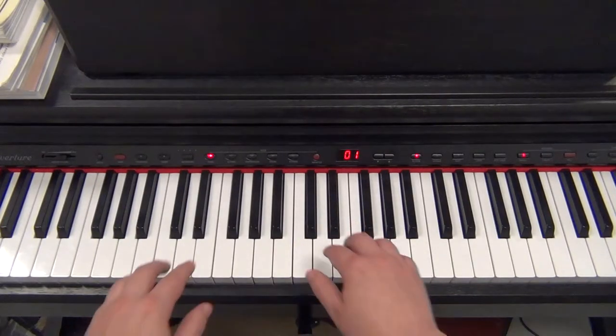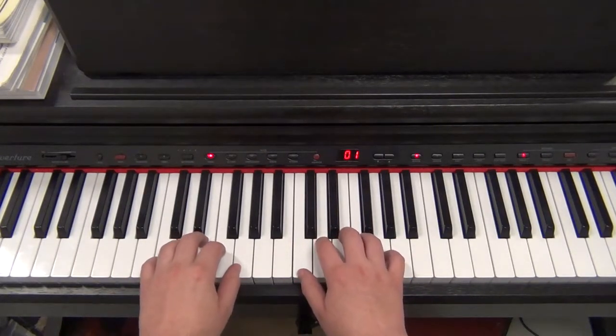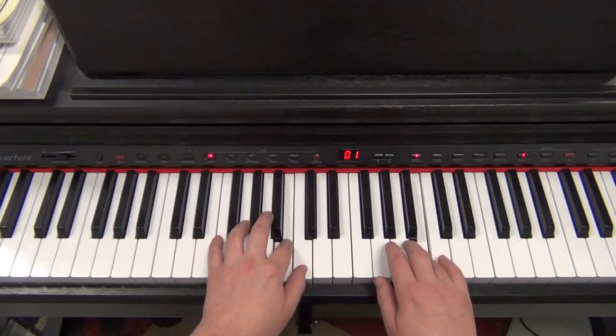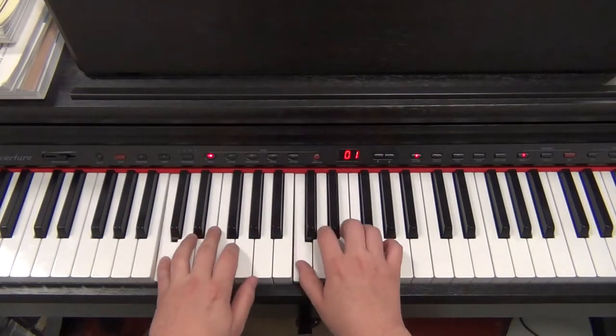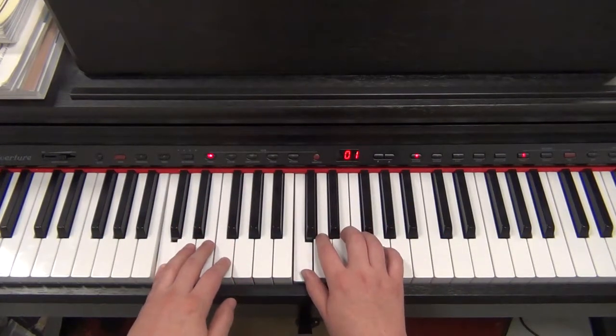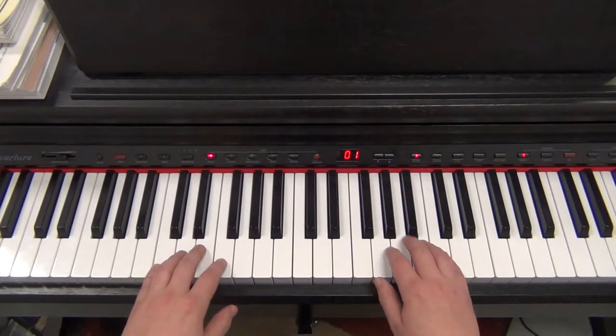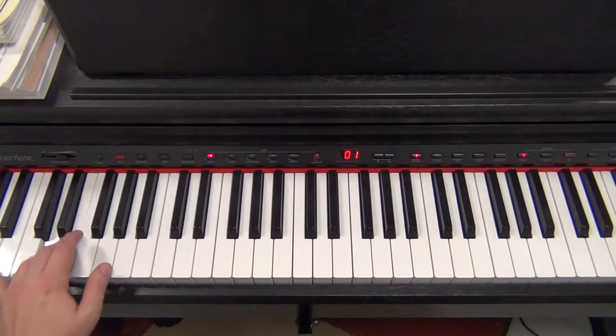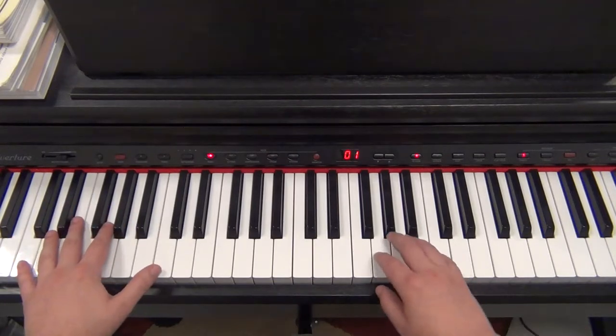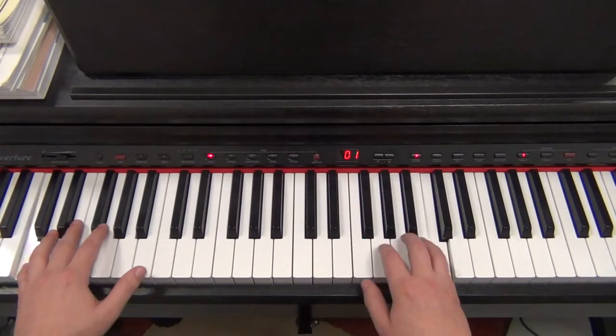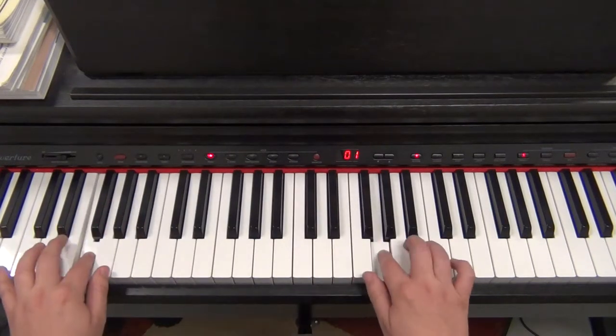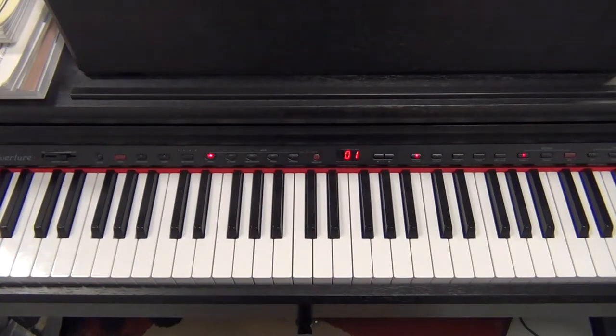And doing those at the same time can be kind of tricky, because the hands move at different times. So if you want to practice doing those together, you can do them the opposite to start out with. Say this hand goes up, and this hand goes down, like this. And then work up to doing them the same way, okay? But that's our full scale.